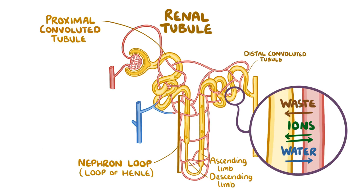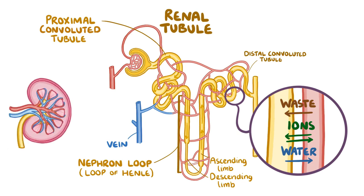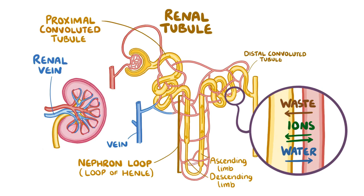This exchange continues until blood is filtered of any excess. Finally, the peritubular capillaries reunite to form larger and larger venous vessels. The veins follow the path of the arteries but in reverse, uniting until they form the large renal vein, which exits the kidney and drains into the inferior vena cava.